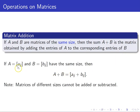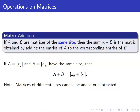Mathematically, if A is the matrix whose i,j entries are denoted by a_ij, and B is the matrix whose i,j entries are denoted by b_ij, the sum of the matrices A and B is the matrix whose i,j entries are a_ij plus b_ij. Matrices of different sizes cannot be added or subtracted because they should have the same size.